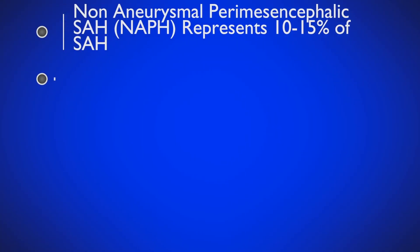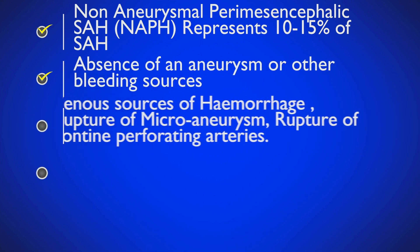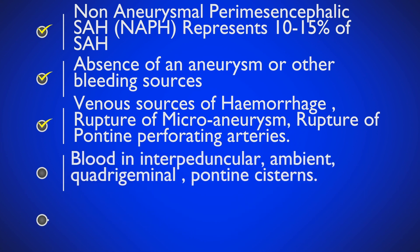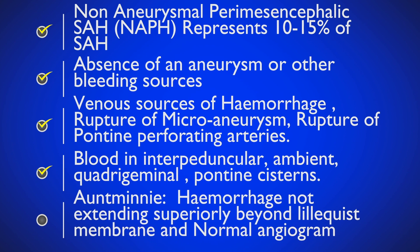This accounts for approximately 10 to 15% of all SAH. There is absence of an aneurysm or any other source of bleeding, attributed to a venous source of hemorrhage and rupture of pontine perforating arteries. Blood is limited to the basal cisterns with a negative CT angiogram — these are the classical features of nonaneurysmal perimesencephalic SAH.